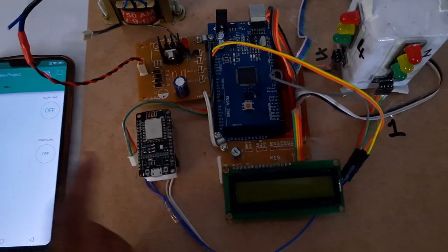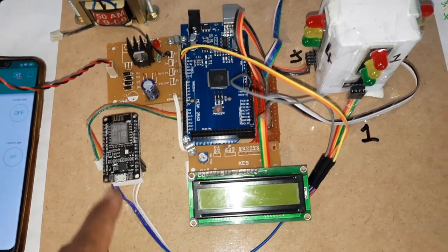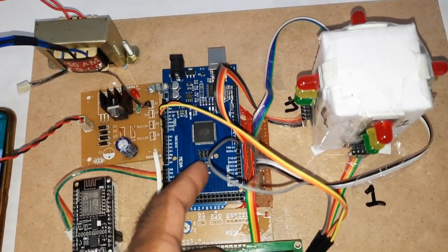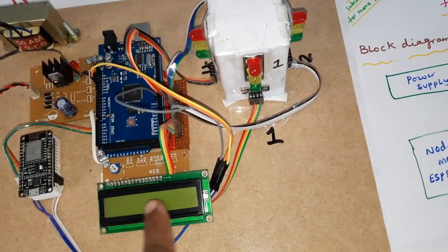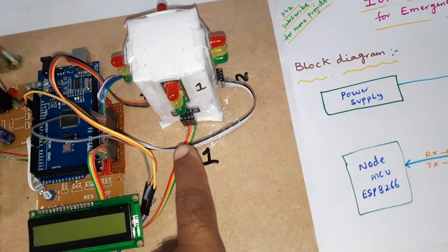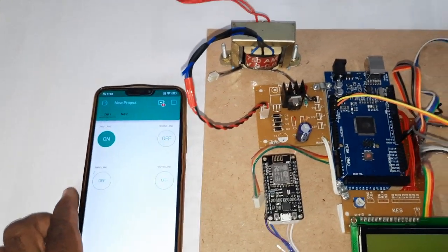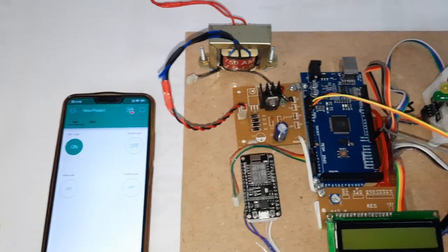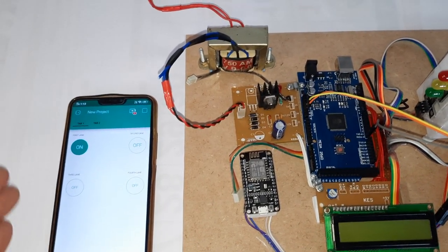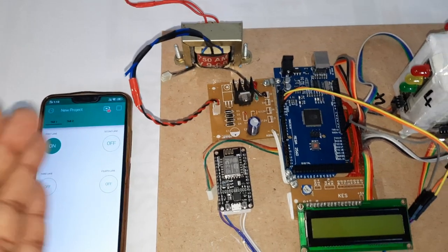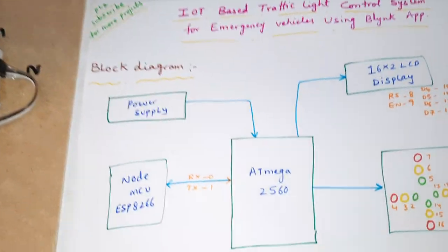When we give the input, the NodeMCU will receive the data and send it to the Arduino board. The Arduino board will display the first lane, and according to that, the LED should be green. This can be remotely controlled — you can control it from anywhere in the world using the Blynk app to NodeMCU.